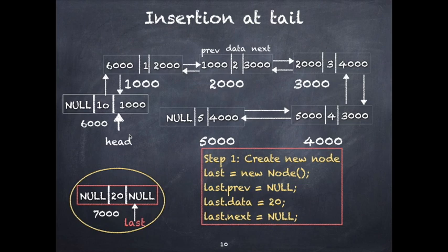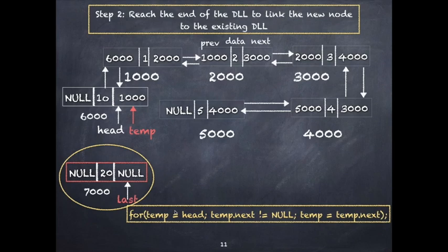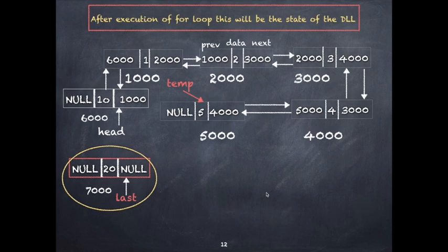After creating the node, you have to reach the last node in the linked list to link the new node to the existing DLL. The traversal step: set temp equal to head, then loop while temp.next is not equal to null, doing temp equals temp.next. This is a do-nothing loop. After completing the iterations, temp will be pointing to the last node in the linked list.